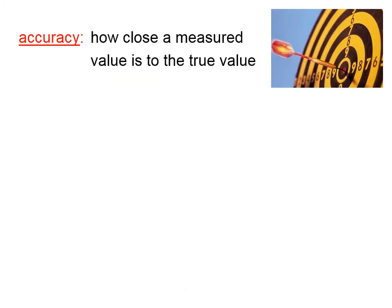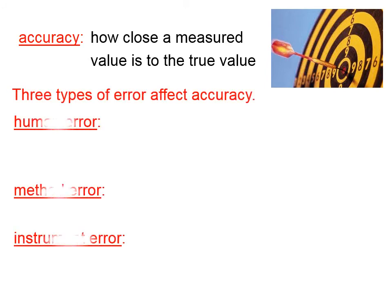Accuracy is not the same as precision. Accuracy deals with how close a measured value is to the true value. It's a measure of how right you are.